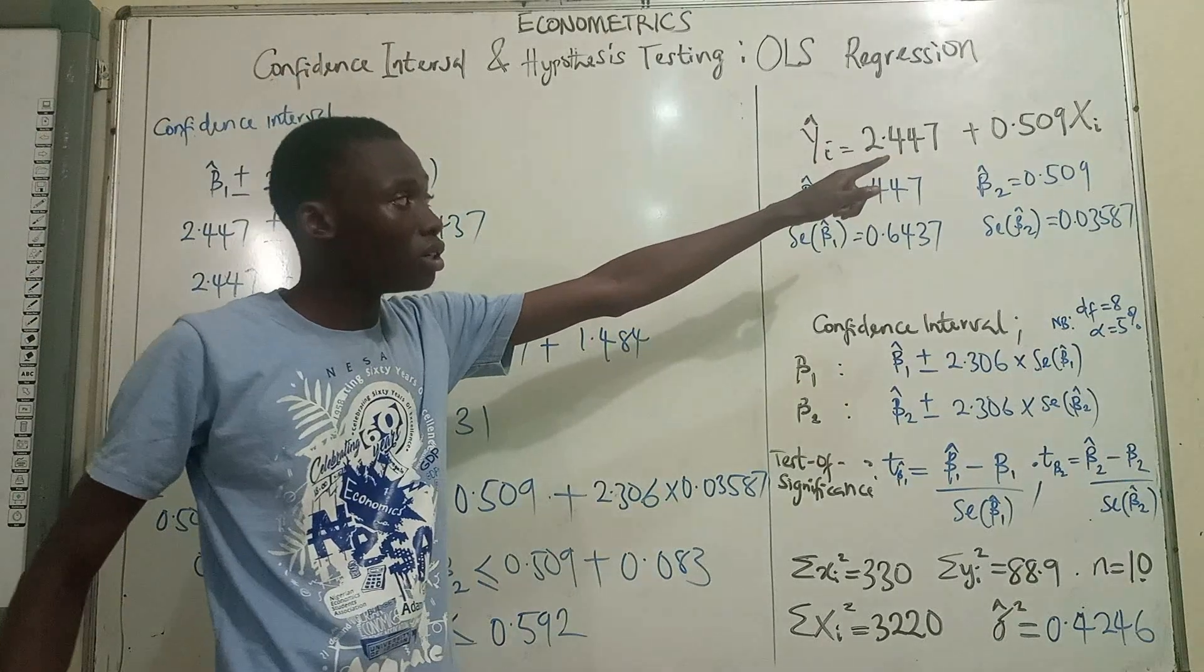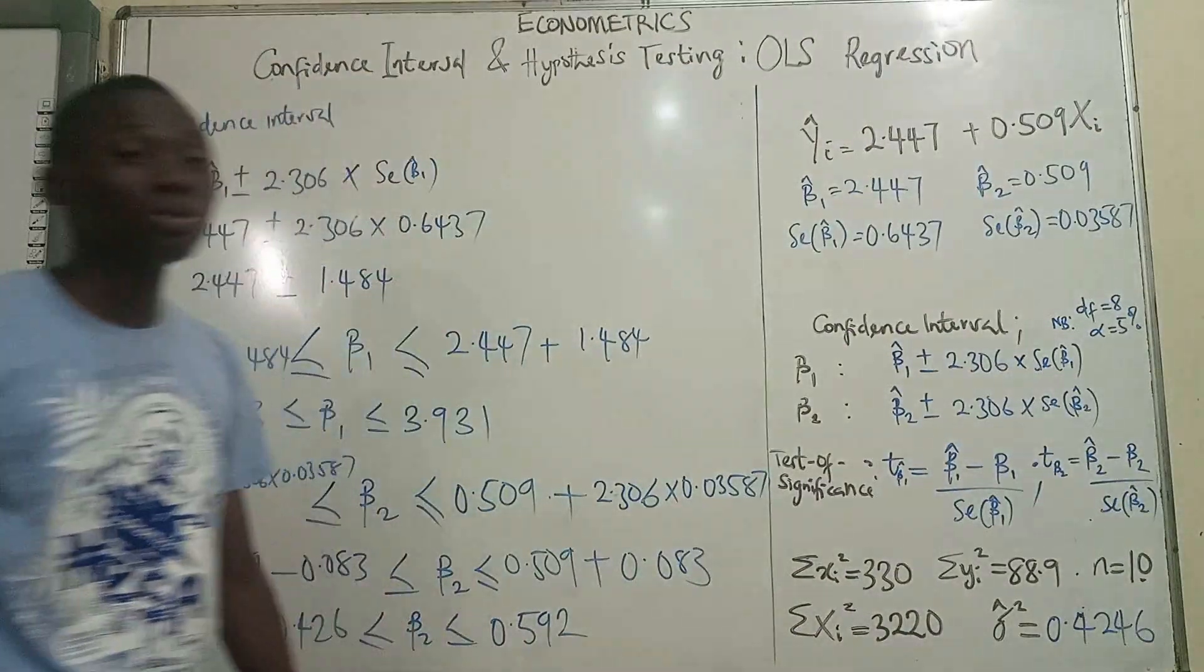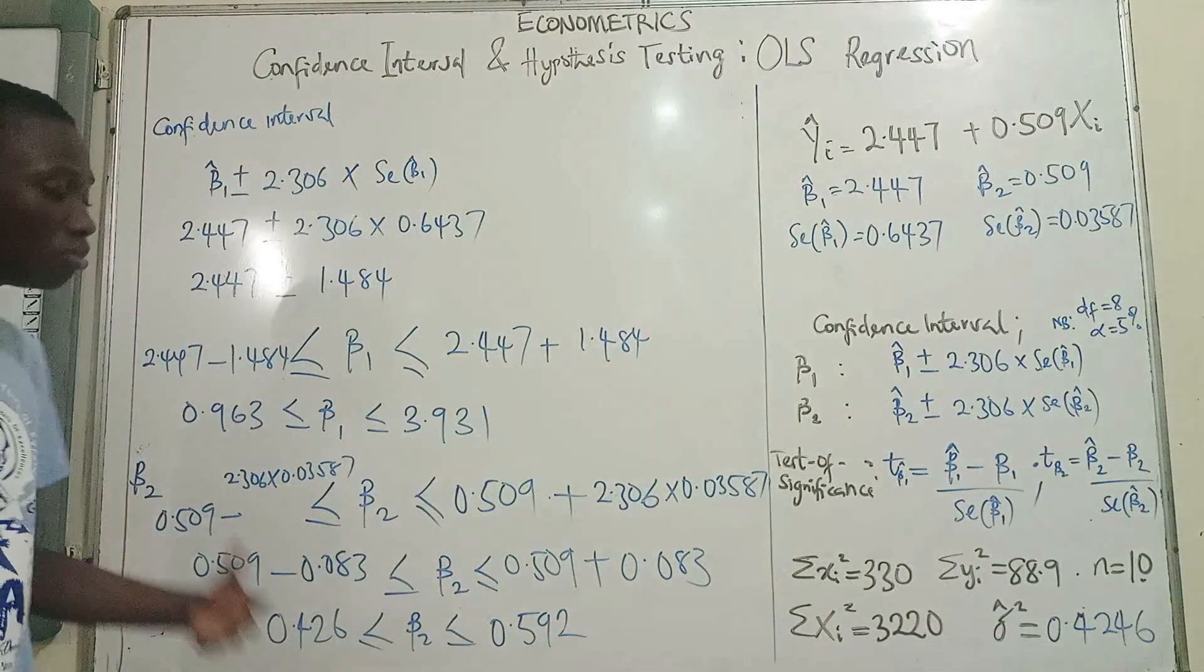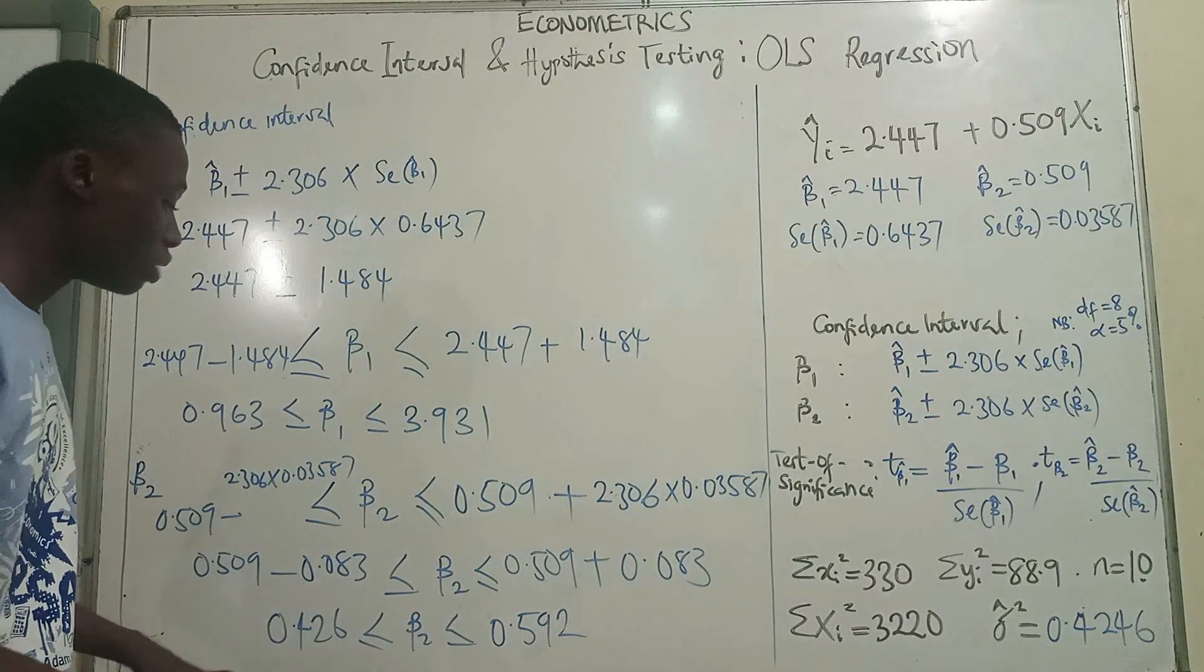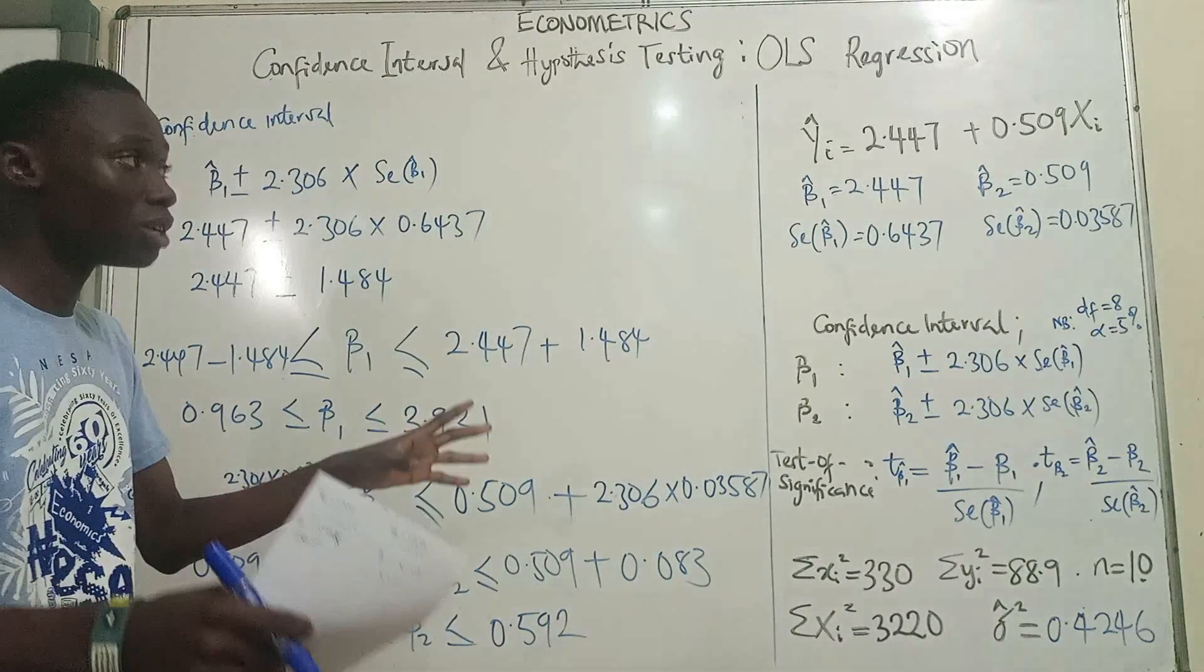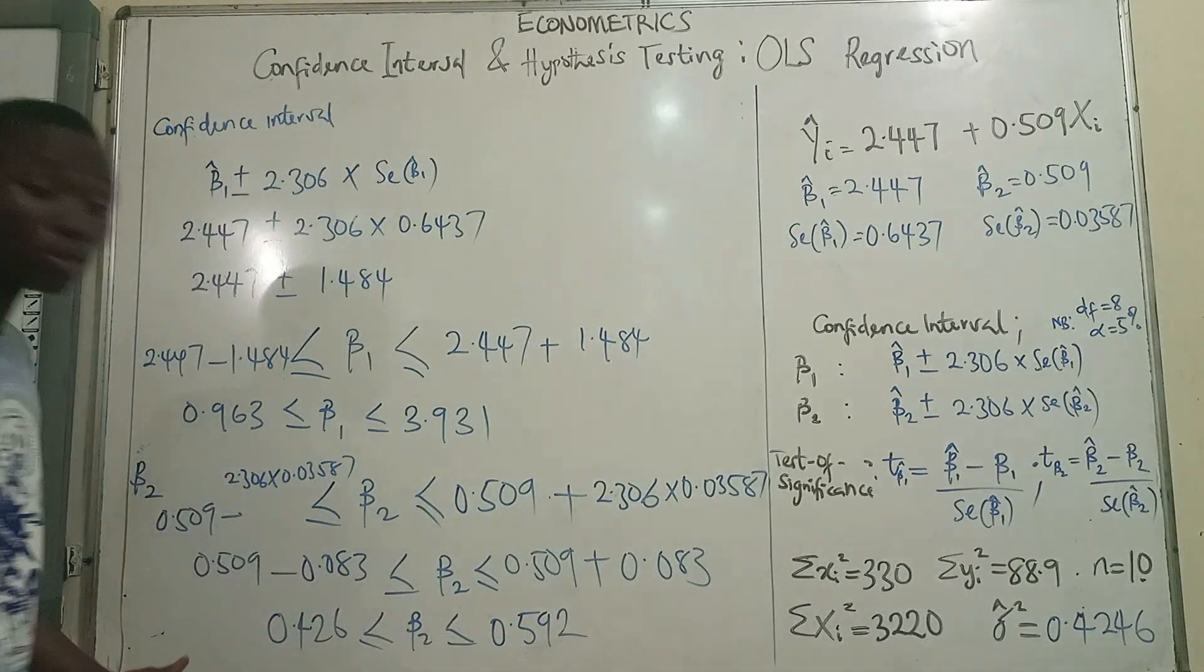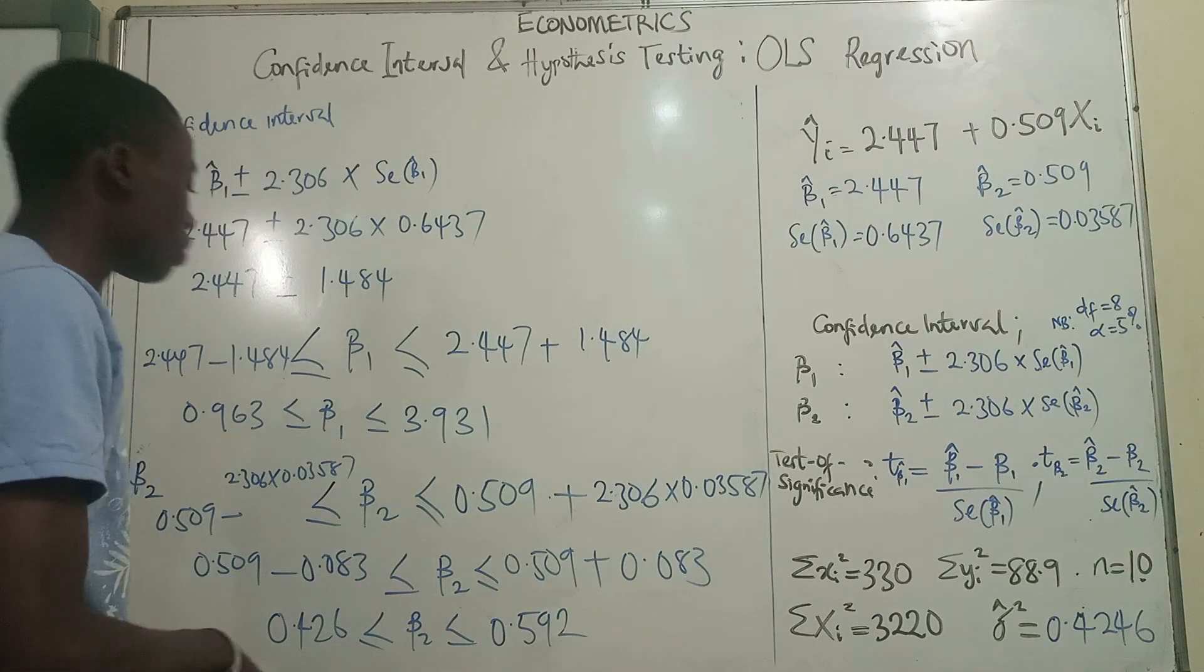Rather than just saying our marginal propensity to consume is 0.509, which is what we estimated, we can say that, to be kind of realistic, we expect that the true marginal propensity to consume will most likely be between 0.426 and 0.592, given a level of confidence.